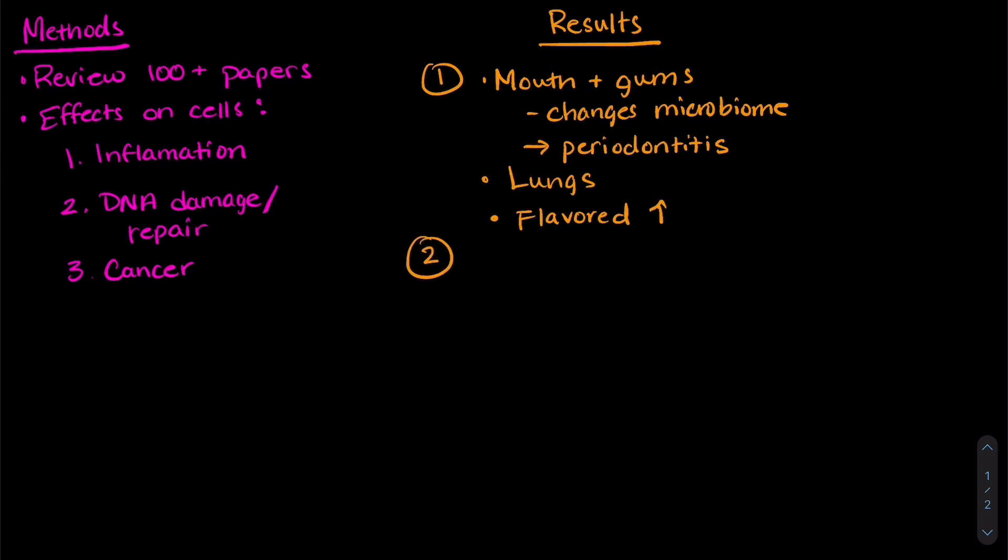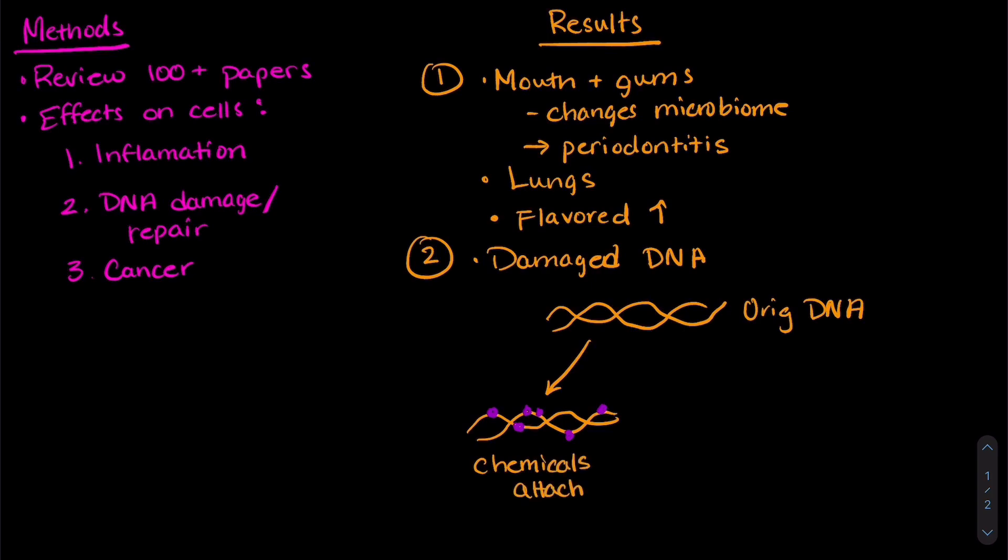Let's look at the second category: DNA damage and repair. The researchers found that vaping damaged DNA. If we look at this original DNA strand, there are a couple different ways that damage can happen. One is that the chemicals in the e-cigarettes can actually attach to the DNA and prevent the DNA from doing what it's supposed to be doing.